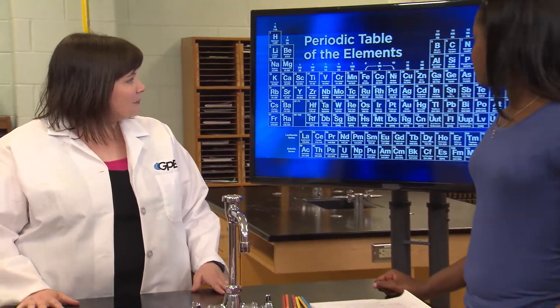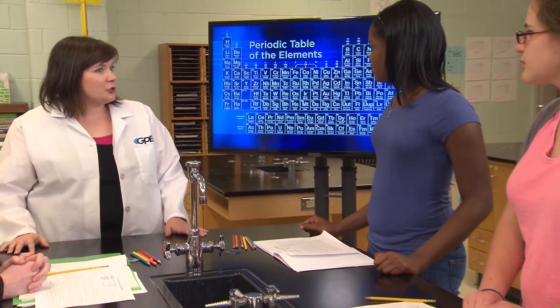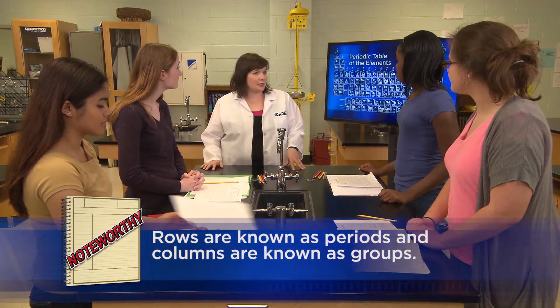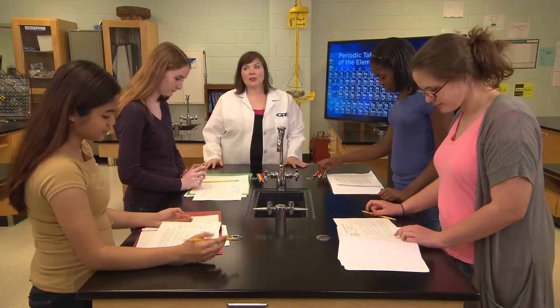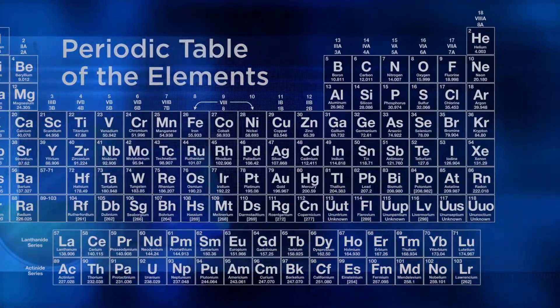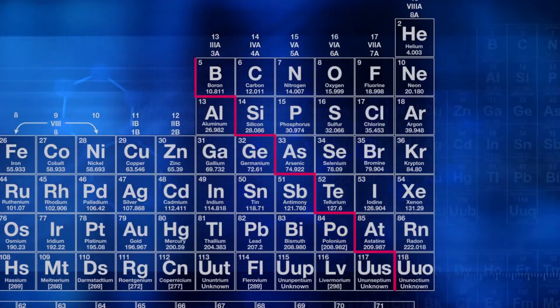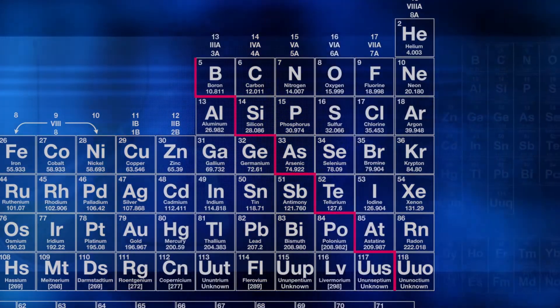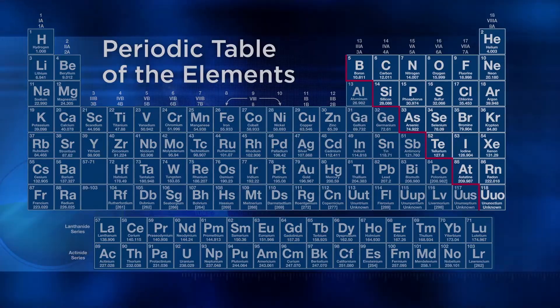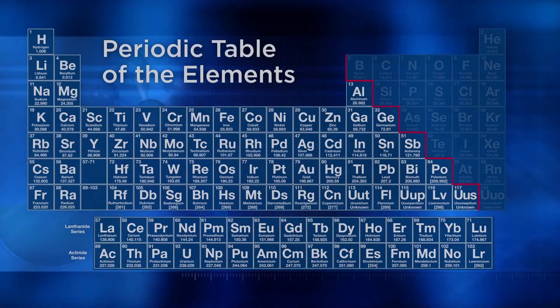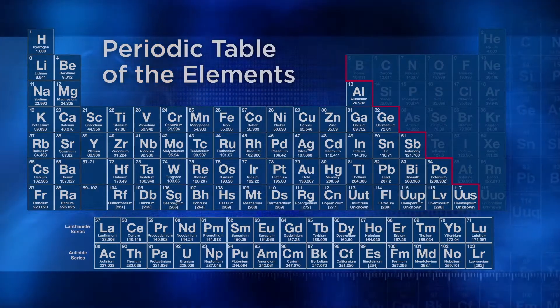Now that you have an idea of the properties of elements and how they're represented on the periodic table, we're going to put this information to use. Let's identify some of these characteristics. You should have already numbered the rows, also known as periods, and the columns, also known as groups. Now find boron, represented by the letter B. Does your periodic table have a stair line that steps down from boron and continues until polonium (P-O)? If it doesn't, draw one now. The elements to the right side of the stairs are the non-metals, all the elements to the left are metals, and the elements that touch the stairs are known as metalloids. Let's start with the metals.